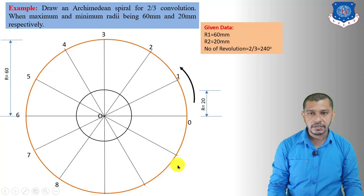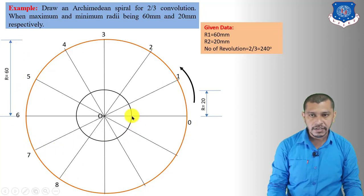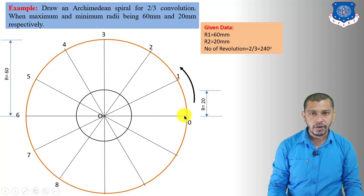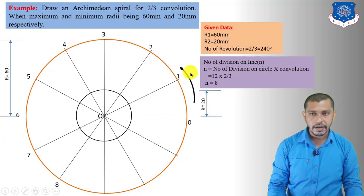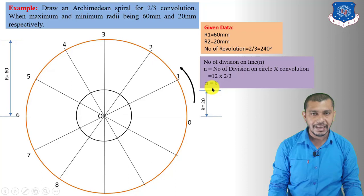Now divide the length between the two circles into equal divisions. Using the equation — number of divisions on line = number of divisions on circle × convolutions — we get 12 × 2/3 = 8. So divide this length into 8 equal divisions.